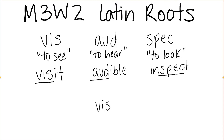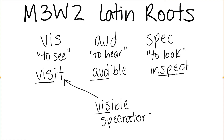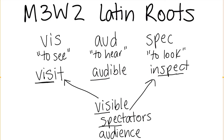If I have the word visible, what Latin root does visible have? Visible has the Latin word vis, meaning to see. Visible is something that you can see. What about spectators? Spectators — s-p-e-c — would go with spec, to look. Spectators are someone who look at something. What about the word audience? Audience has a-u-d in it, meaning to hear. This would go under aud, meaning to hear.